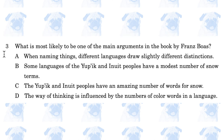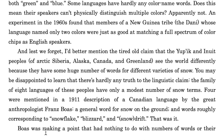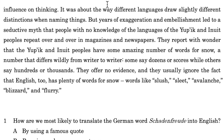Number 3: What is most likely one of the main arguments in the book by Franz Boas? A: when naming things, different languages draw slightly different distinctions; B: some languages of the Yupik and Inuit peoples have a modest number of snow terms; C: the Yupik and Inuit peoples have an amazing number of words for snow; D: the way of thinking is influenced by the number of color words in a language. The passage states Boas was making a point that had nothing to do with the numbers of words or their influence on thinking — it was about the way different languages draw slightly different distinctions when naming things. So the answer is A.